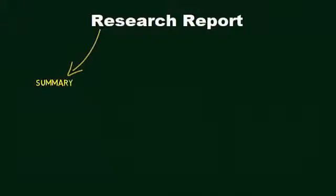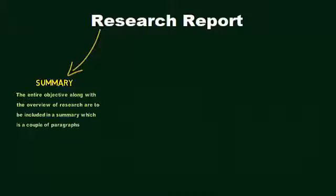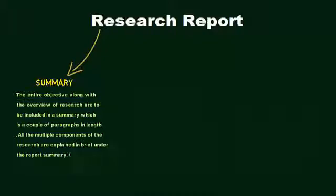The various sections of a research report are: 1. Research Report Summary. The entire objective along with the overview of research are to be included in a summary, which is a couple of paragraphs in length. All the multiple components of the research are explained in brief under the report summary. It should be interesting enough to capture all the key elements of the report.